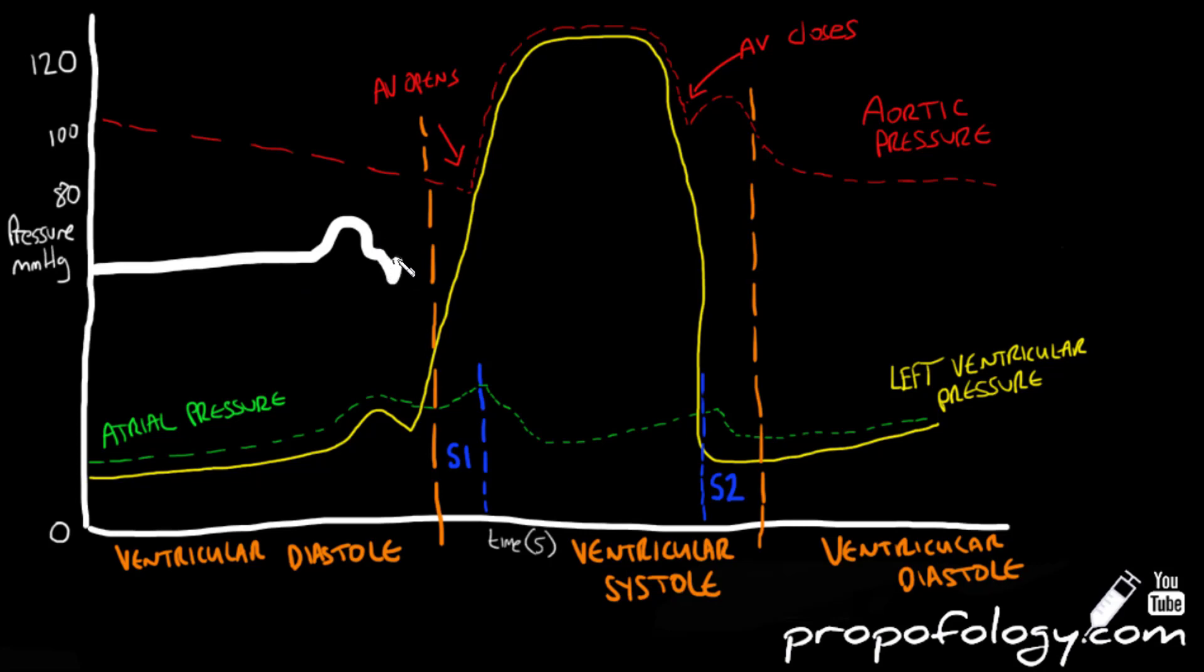The QRS complex is the depolarization of the ventricles, and so the QRS is complete just prior to aortic valve opening. The S point usually sits over the period of the S1 heart sound.